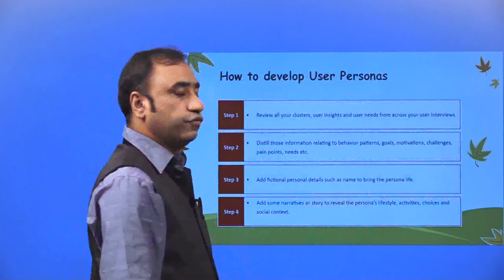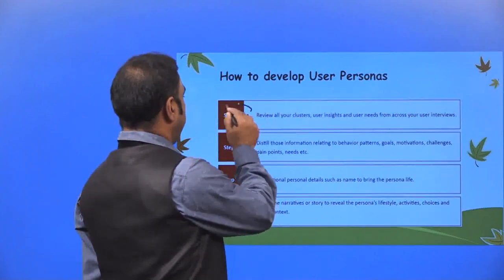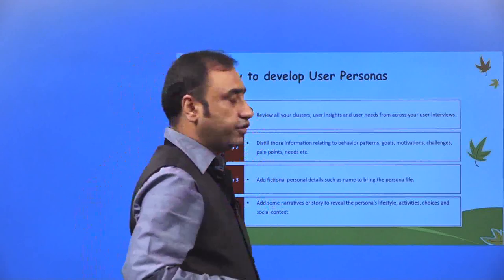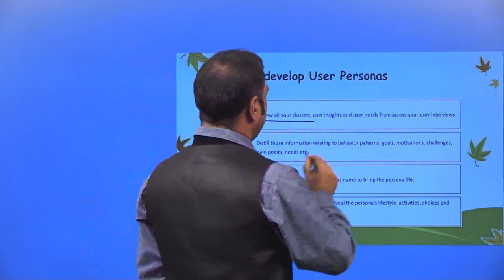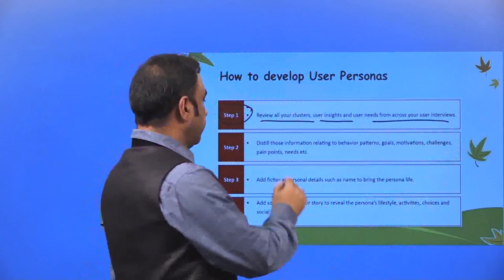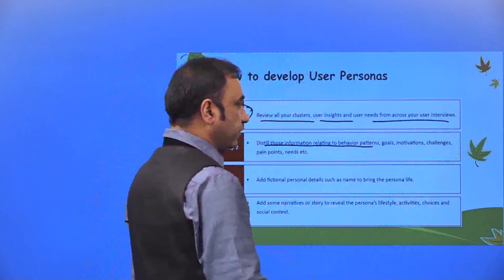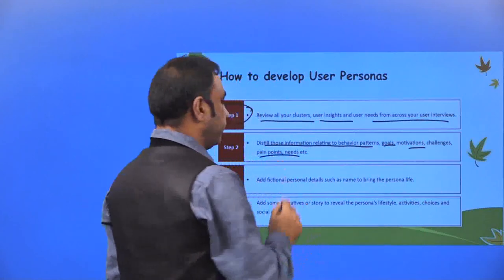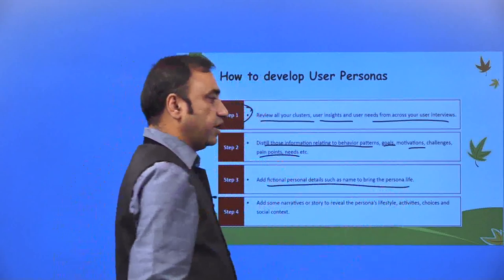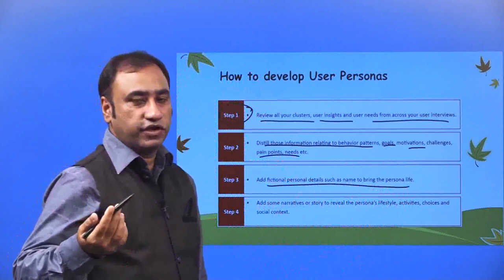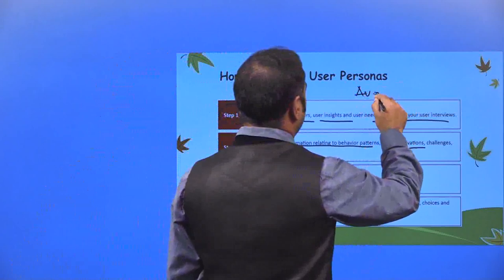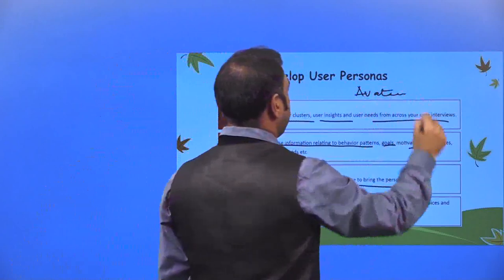How to develop user personas: Step 1 — review all your clusters, user insights and user needs from across your user interviews. You have to find your clusters, user insights and user needs. Step 2 — distill information relating to behavior patterns, goals, motivation, challenges, pain points, needs, etc. Add fictional personal details such as a name to bring the persona to life — you can give a name like an avatar or 'customer avatar.'